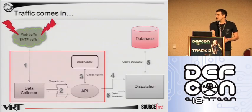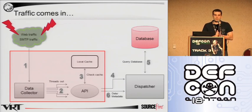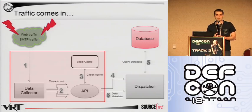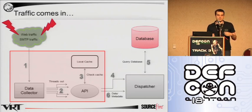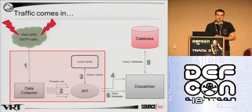Here's an example of data collection. In our case we're looking at web traffic and SMTP traffic. So they come in, the data collector will then take that data and assemble it in such a way that it can be processed. So in the case of downloading a file over HTTP, strip out the headers, reassemble the file, package it up, and ship it off.